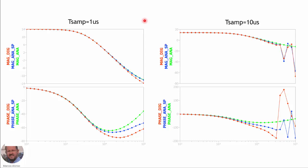Finally, here is a comparison of the frequency responses for two different sampling periods. For a sampling period of one microsecond we have good magnitude and phase results. Increasing the sampling period to 10 microseconds — corresponding to a sampling frequency of 100 kilohertz — we see increased phase lag, and as we approach 50 kilohertz we see unusual behavior because the sampling period is too large to operate accurately at those high frequencies.